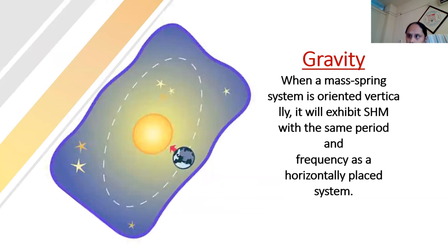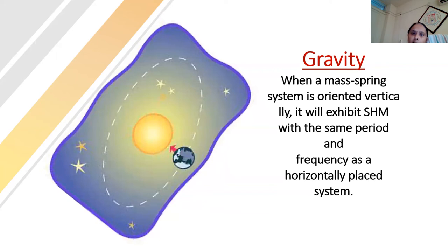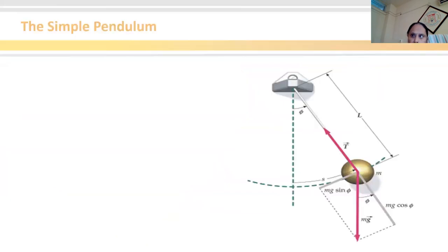Now, what about gravity? When a mass-spring system is oriented vertically, it will exhibit simple harmonic motion with the same period and frequency as a horizontally placed system. So even if the orientation is changed by 90 degrees, the frequency and period remain unaffected.